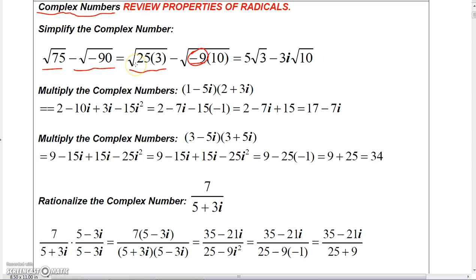Let's take care of this first radical. The square root of 25 is simply 5, so I'm going to have 5 times the square root of 3.